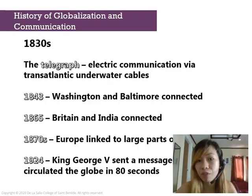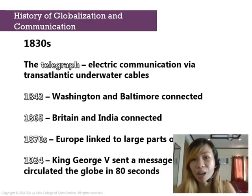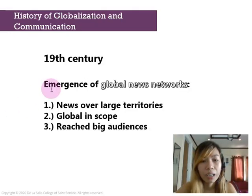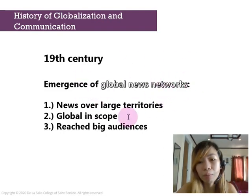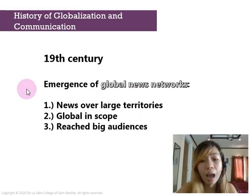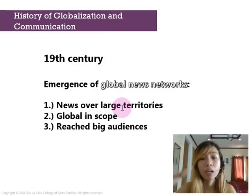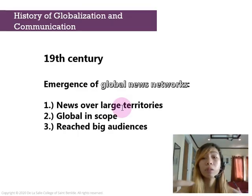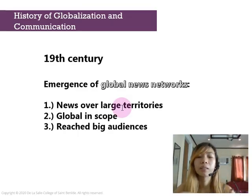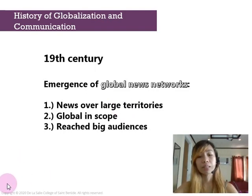They would have never imagined something like cell phones or holograms nowadays. During the 19th century, there was the emergence of global news networks, made possible by satellites and other technologies. News was now disseminated over large territories at once rather than manually and traditionally. The news was global in scope rather than local, and it reached big audiences.